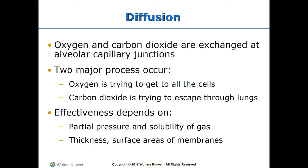Gas exchange happens through diffusion; oxygen and carbon dioxide are exchanged at the alveolar-capillary junctions within the respiratory membrane. Since breathing is essential for life — cells require oxygen and must rid themselves of toxic CO2 — the effectiveness of diffusion depends on the partial pressure of these gases in the arteries and how soluble they are in plasma.